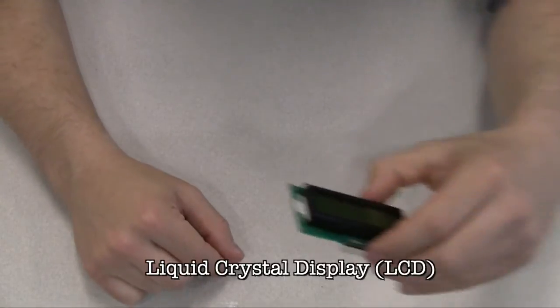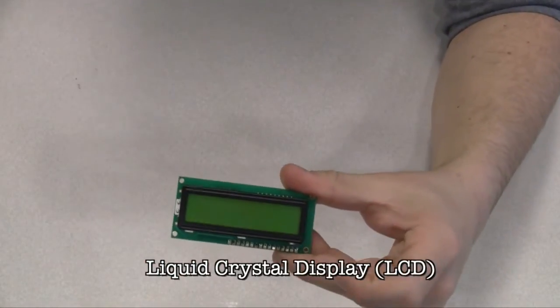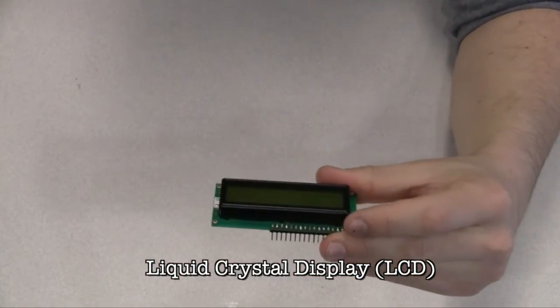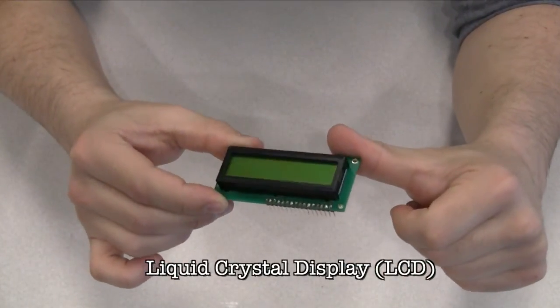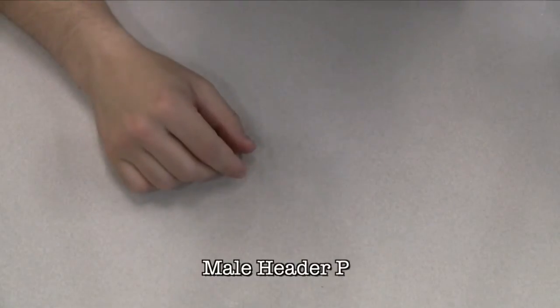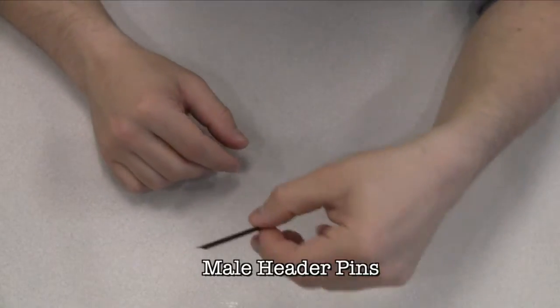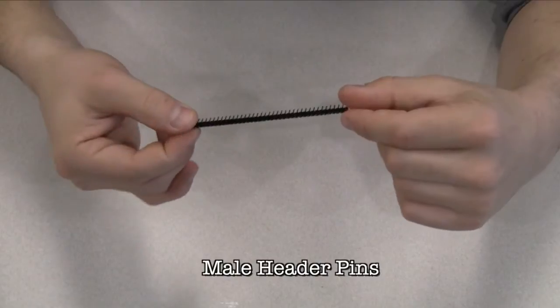A liquid crystal display, or LCD, is a type of alphanumeric or graphic display based on liquid crystals. LCDs are available in many sizes, shapes, and styles. This one has two rows with 16 characters each. Male header pins are pins that fit into female sockets, like those on a breadboard. They help make connecting things much easier.